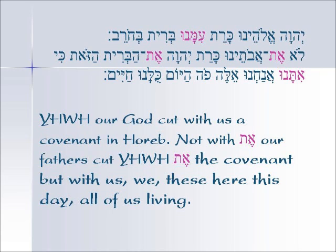Not with our fathers cut Yahweh — what? — the covenant. So we can see in the English, placing the Aleph Tavs in, the first one has to be 'with' and the second one is a direct object marker. Not ET — not with our fathers — cut Yahweh what? The direct object ET, the covenant, et ha-brit.